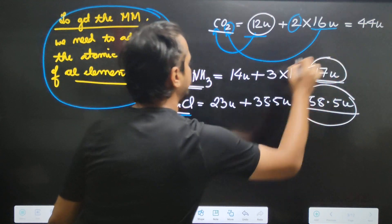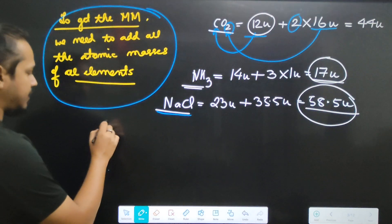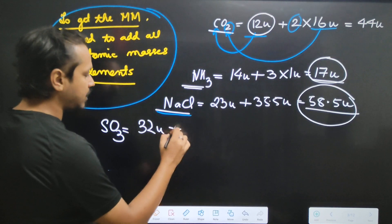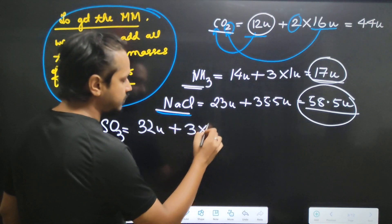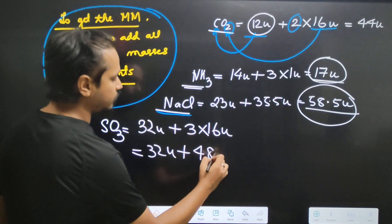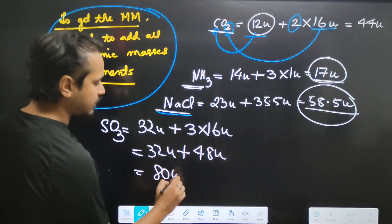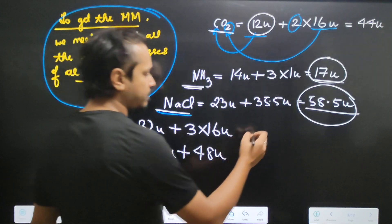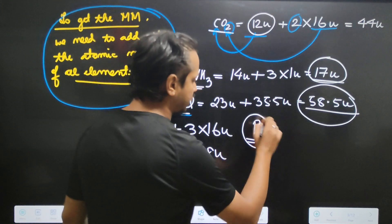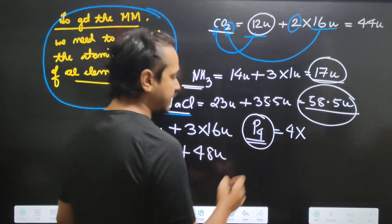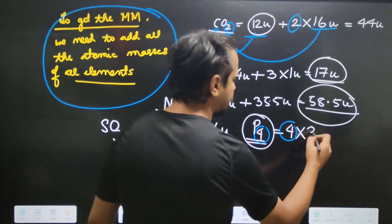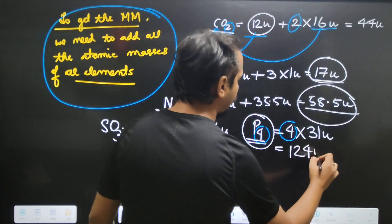So 58.5u, 17u — these are molecular masses. For sulfur trioxide, the sulfur mass is 32u, and oxygen is 3 into 16u. Total: 32u plus 48u gives 80u. For water, 18u. For phosphorus P4, the mass of phosphorus is 31u, so 4 into 31u equals 124u. This is how you calculate molecular masses.